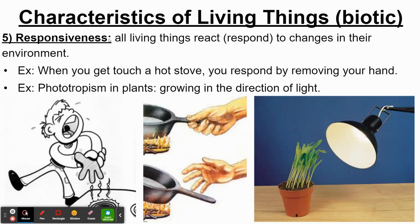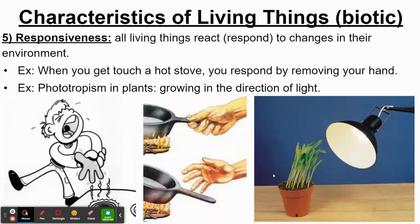Responsiveness is the fifth characteristic of life. All living things are able to respond to their environment in some way. Something as simple as touching a hot stove — signals are sent to your spinal cord and brain, which tells your muscles to move your hand away so you don't injure yourself further. Plants can do something similar: there's a light source and the plant has grown toward it, because plants need light to survive. This is called phototropism — photo meaning light — where plants grow in the direction of light.